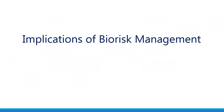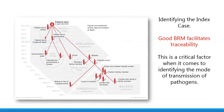The implications of biological risk management are many. For instance, good biological risk management can facilitate the identification of index cases for patient zero, and contact tracing can also facilitate the identification of the possible routes of transmission in the case of an epidemic or a pandemic.